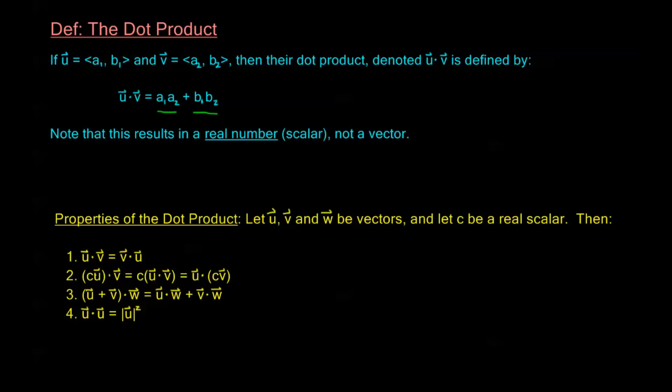We also have that when we multiply by a scalar, that scalar commutes and associates in any way we want. So we could have c times u, giving us a vector, and then dot that result with v — or that equals the scalar times the dot product u dot v — or the same as dotting u with the vector cv. This scalar can be moved around however is most convenient.